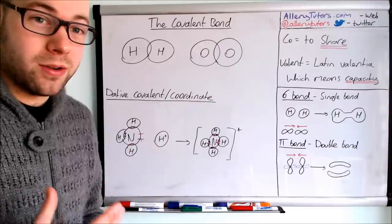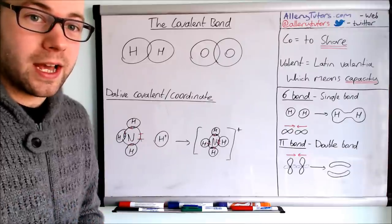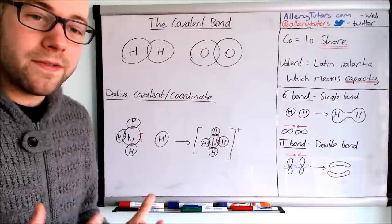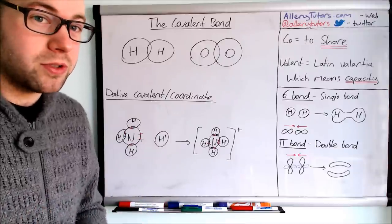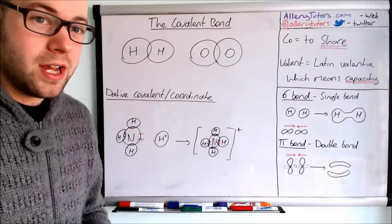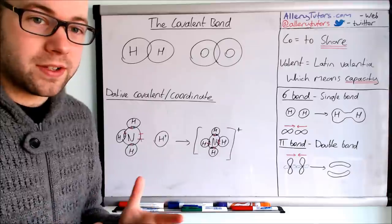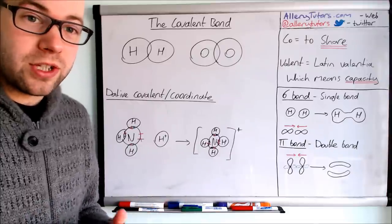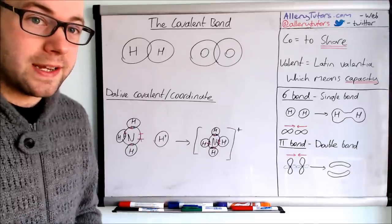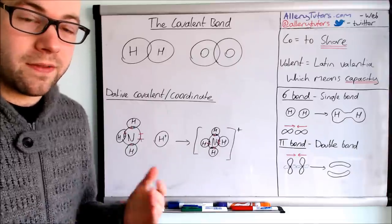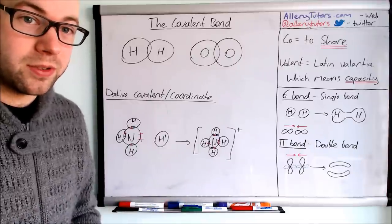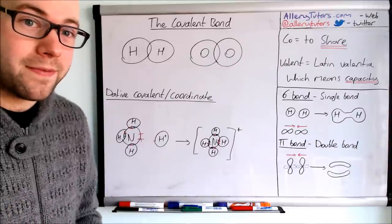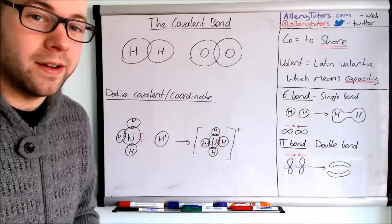According to the basic laws of chemistry, the first shell can only hold two electrons, and then the shells after that can hold eight. Some shells can hold 18 if they have d orbitals, and even more if they have f orbitals.